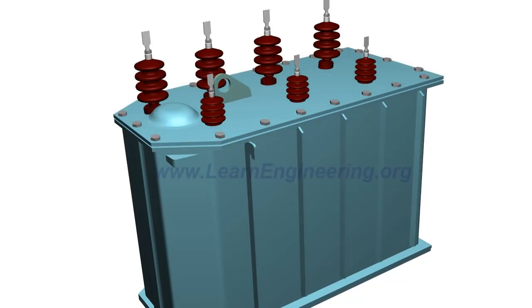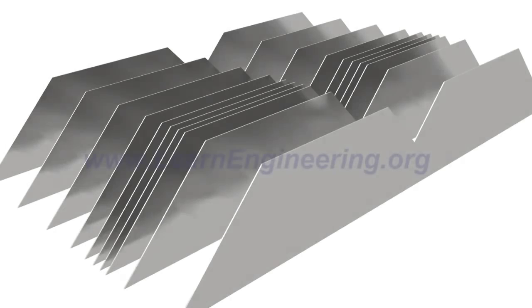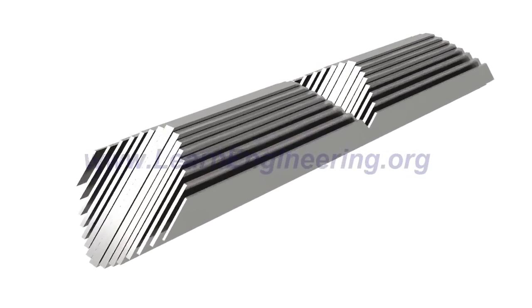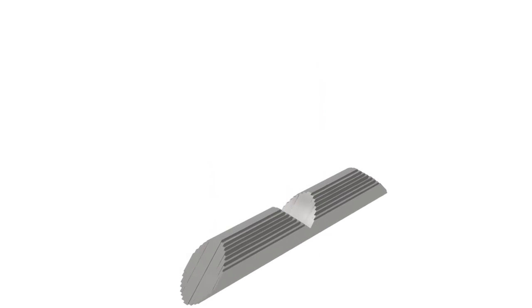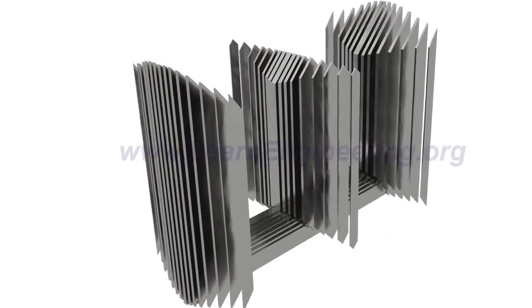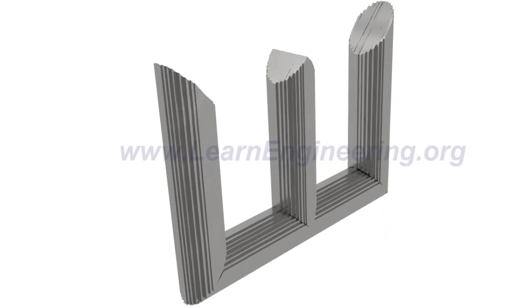The core of the transformer is made of thin, insulated steel laminations. Such steel laminations are stacked together, as shown, to form three-phase limbs. The purpose of thin laminations is to reduce energy loss due to eddy current formation.